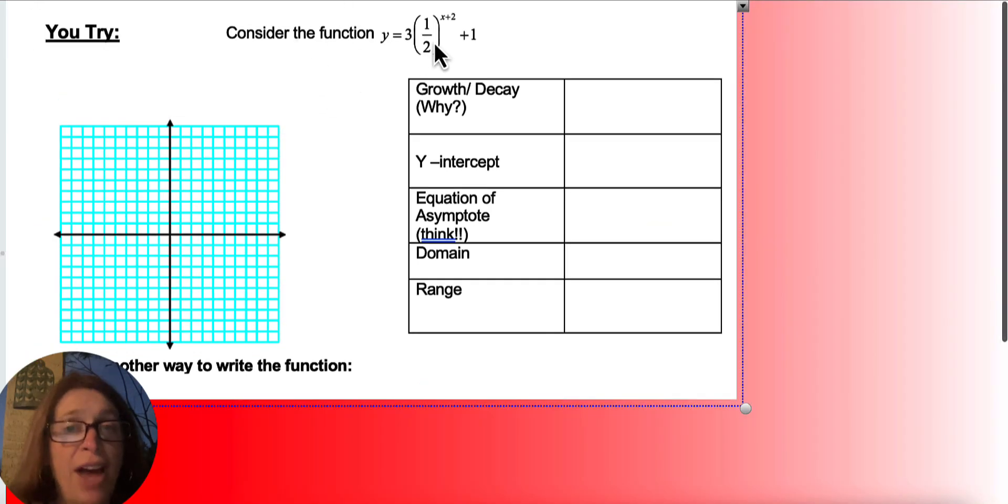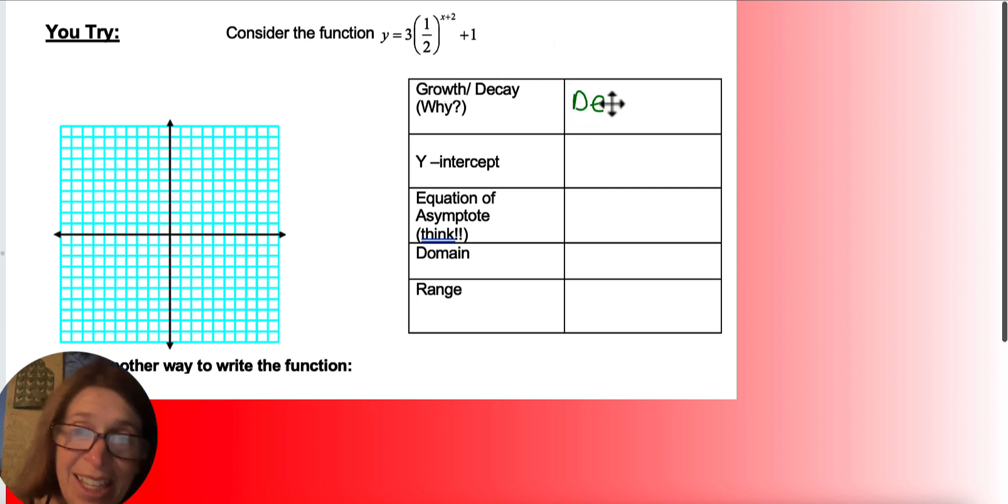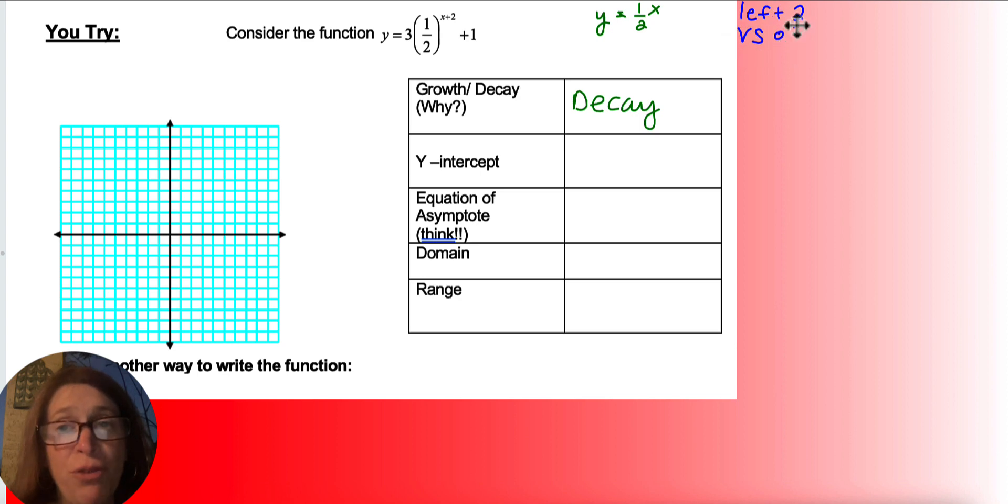Let's try one more. So here we've got 3 to the 1 half. We know it's decay. So again, if my parent graph is y equals 1 half to the x, then this graph is moving to the left 2, vertical stretch of 3, and up 1. So I left the points, I left everything the same.